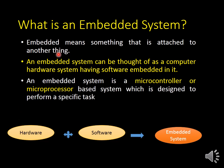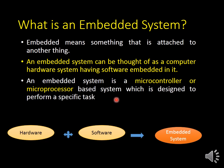What is an embedded system? Embedded means something that is attached to another thing. An embedded system consists of hardware and software — a combination of hardware and software is called an embedded system. Here, software is used for controlling the hardware. In an embedded system, a microcontroller or microprocessor is the basic unit.